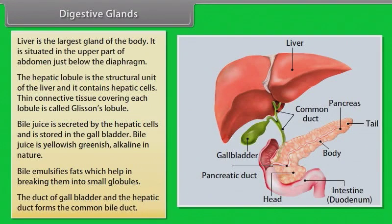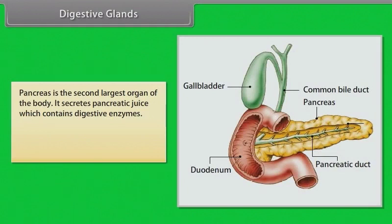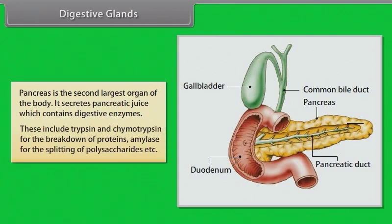The duct of the gall bladder and the hepatic duct form the common bile duct. The pancreas is the second largest organ of the body and secretes pancreatic juice containing digestive enzymes, including trypsin and chymotrypsin for breakdown of protein, and amylase for splitting of polysaccharides.